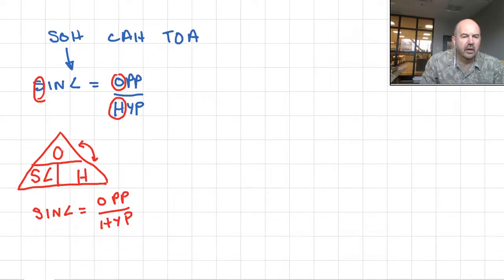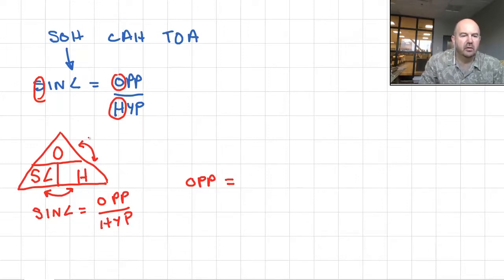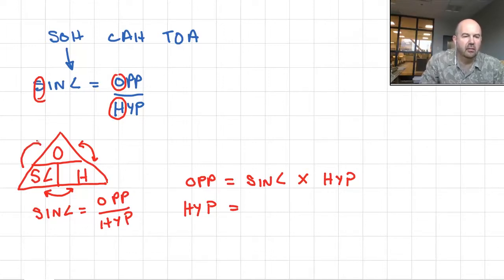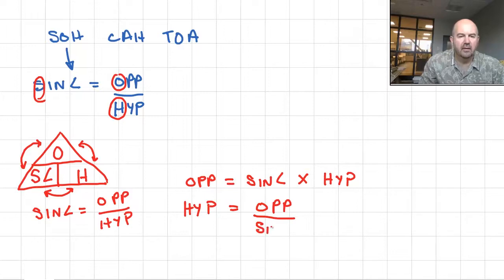However, if you're looking for the length of the opposite side, it will be equal to the sine of the angle times the hypotenuse, because they're beside each other — that means multiplication. If you're looking for the hypotenuse length, it will be equal to the opposite length divided by the sine of the angle.